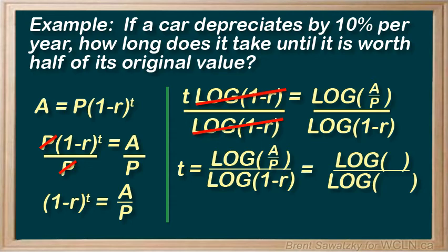In this case, the rate is 10% or 0.1. And we don't know the p or the a, but we do know that the current value a must be half of the original value p. So we know that our ratio a over p must be one half. Now, some might plug in sample numbers like maybe a equals one and p equals two. And that's fine. Whatever way makes most sense to you.